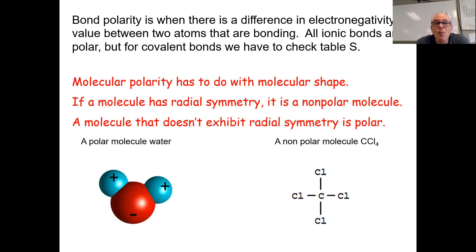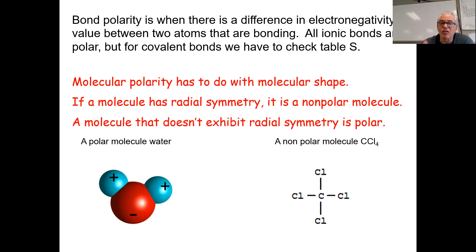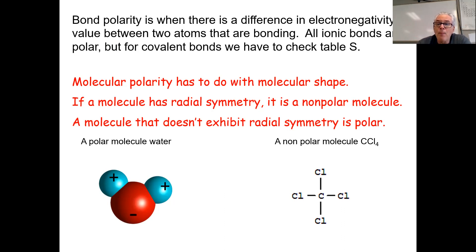Molecular polarity has to do with shape. Water does not have radial symmetry — it has bilateral symmetry. If you cut it left to right, the top has two hydrogens and the bottom has two pairs of unshared electrons. The molecule does not have radial symmetry, so the molecule is polar. CCl4, though built in a triangular pyramid shape, exhibits radial symmetry — all the polarity in the bonds is balanced. So it becomes a nonpolar molecule. Both water and carbon tetrachloride have polar bonds, but water is a polar molecule and carbon tetrachloride is nonpolar.